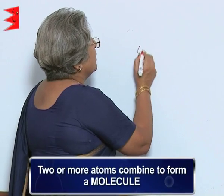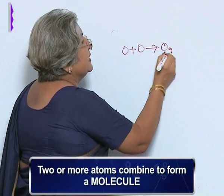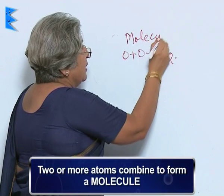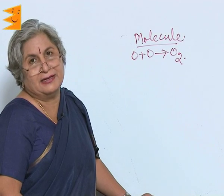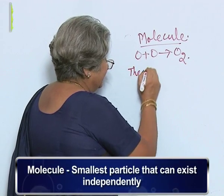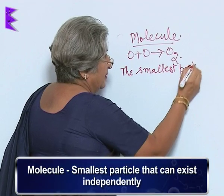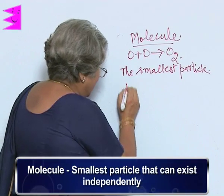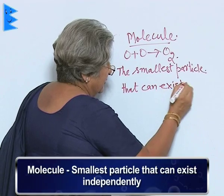Now, when two or more atoms combine with each other, what they form is a molecule. And a molecule, unlike an atom, can exist independently. So we can define a molecule as the smallest particle that can exist independently. Atom is also smallest, but why I say again smallest? Because it cannot always exist independently.